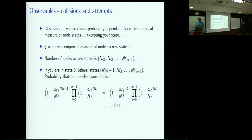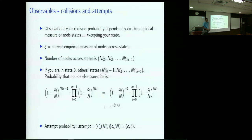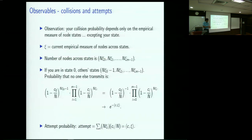The inner product C·Xi is actually a sort of activity coefficient, because C is your attempt probability vector and Xi is the empirical distribution across states. So C·Xi measures activity, which is the attempt probability in the system. The probability that no one else transmits — and therefore if a node transmits it will not encounter a collision — is e to the minus attempt. Assume that node interactions decouple, meaning their evolutions are all evolving independently. Once I get this collision probability, I have a relationship between attempt and collision probability.